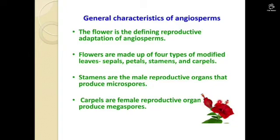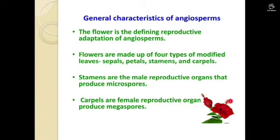The flower is the reproductive structure of angiosperms. Flowers are made up of four types of modified leaves: sepals, petals, stamens, and carpels. These are the carpels — carpels are the female reproductive organ, also called megasporophylls.